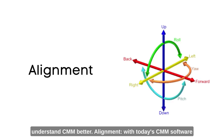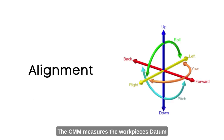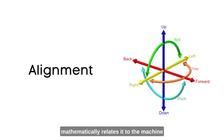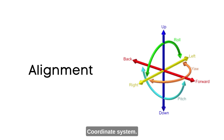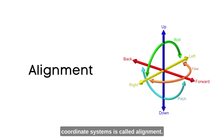Alignment: With today's CMM software, the CMM measures the workpiece's datums, establishes the part coordinate system, and mathematically relates it to the machine coordinate system. The process of relating the two coordinate systems is called alignment.